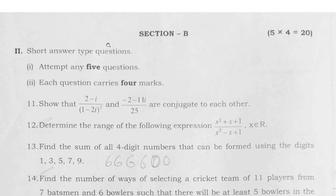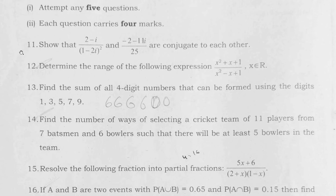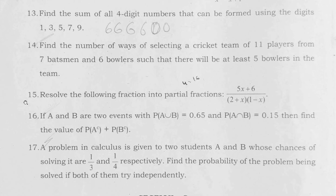Next, in Section B we have seven SAQs — short answer questions — out of which you have to answer any five. First SAQ is from chapter 1, Complex Numbers. Second SAQ is from chapter 3, Quadratic Expressions. Third and fourth SAQs are from chapter 5, Permutations and Combinations. Fifth SAQ is from chapter 7, Partial Fractions. Sixth and seventh SAQs are from chapter 9, Probability.